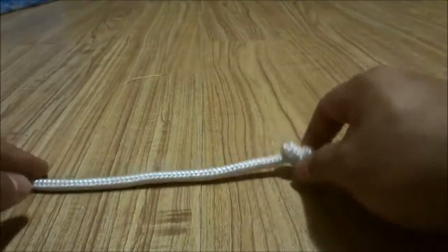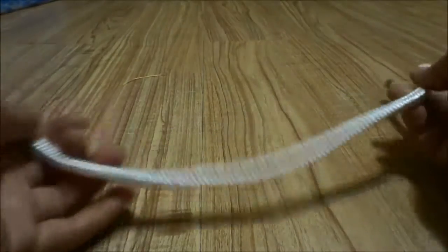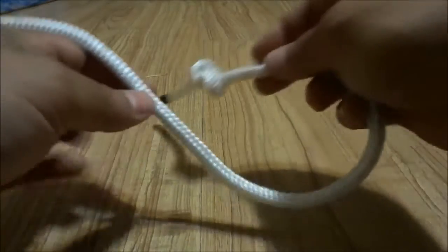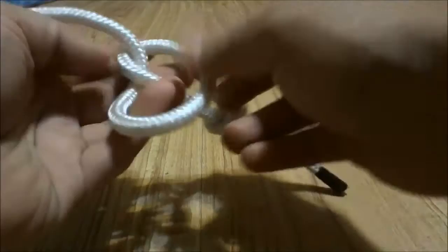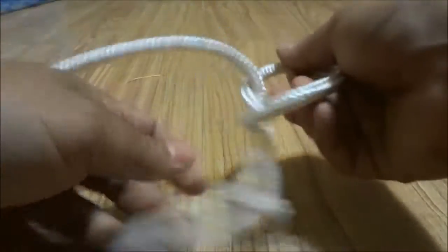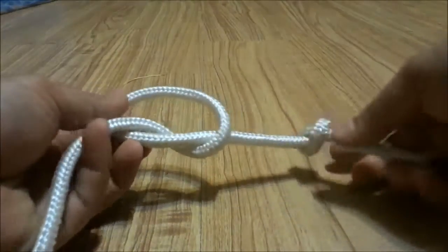So now I am going to take the end of the rope and I am going to tie another overhand knot but I am not going to tighten this one. So as you can see I have my overhand knot right here and I am not tightening it.